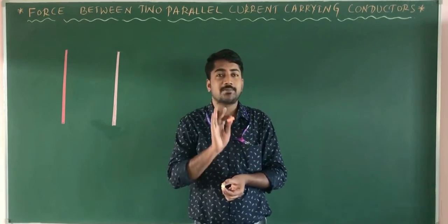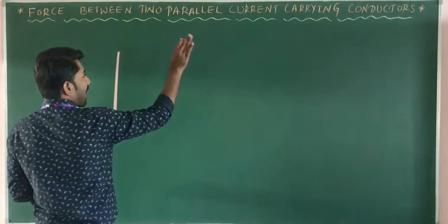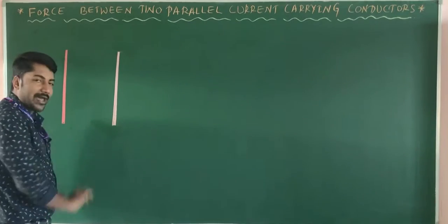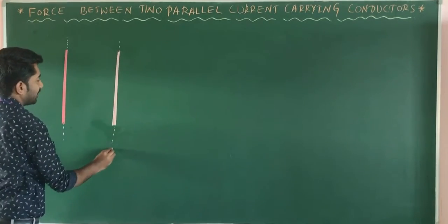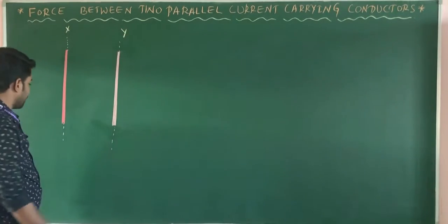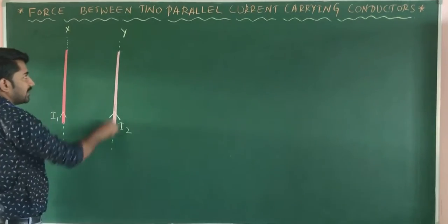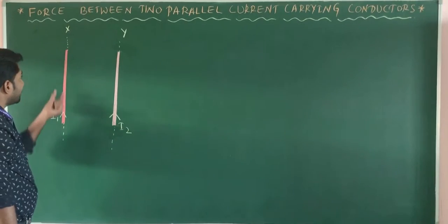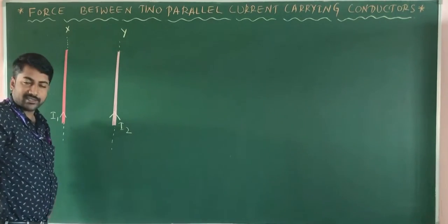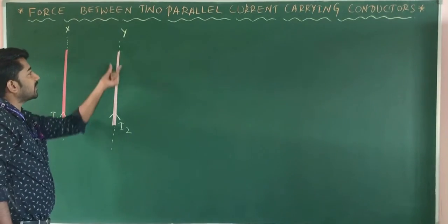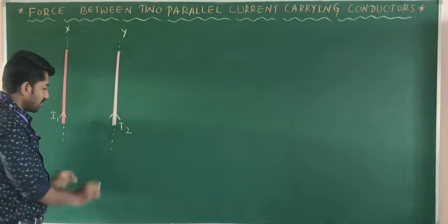Now I am going to calculate the amount of force present between two parallel current-carrying wires. Consider two parallel current-carrying wires: conductor X and conductor Y. I1 is the current flowing in conductor X and I2 is the current flowing in conductor Y. When current flows in conductor X, a magnetic field is produced around it. Similarly, when current flows in conductor Y, a magnetic field is produced around it.